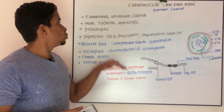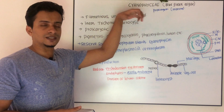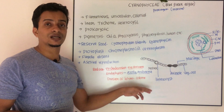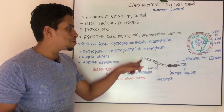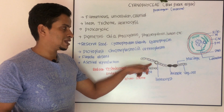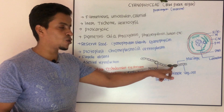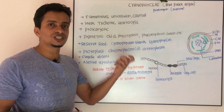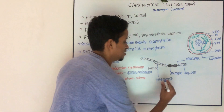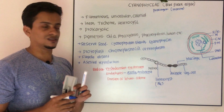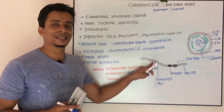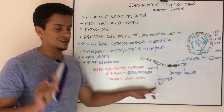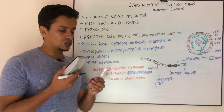Some Cyanophysiae exist as colonial forms. In a network of colonial forms, there is division of labor among members. Some cells are vegetative, some are meant for reproduction, and some specialized cells are meant for nitrogen fixation — these are the heterocysts.